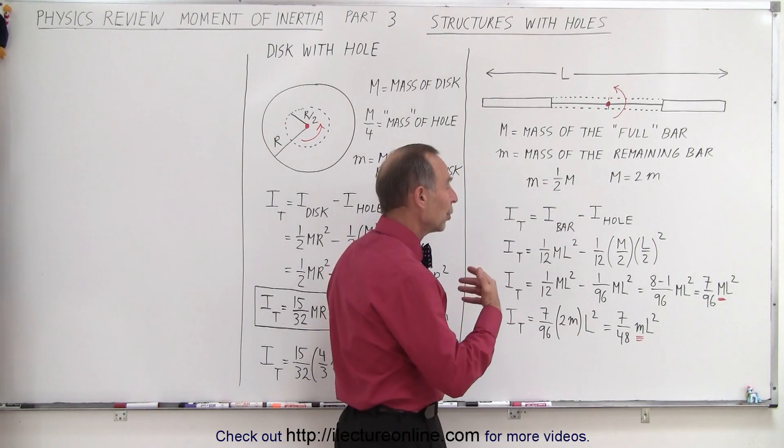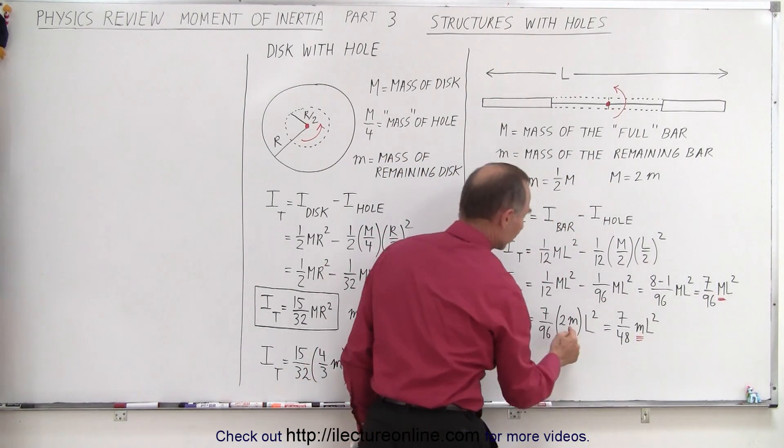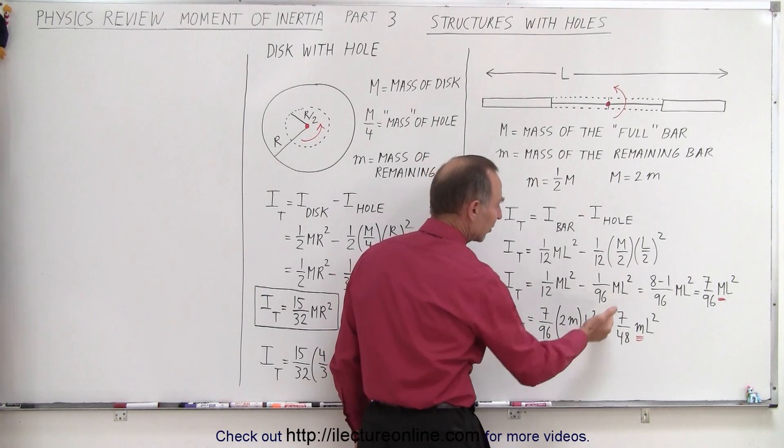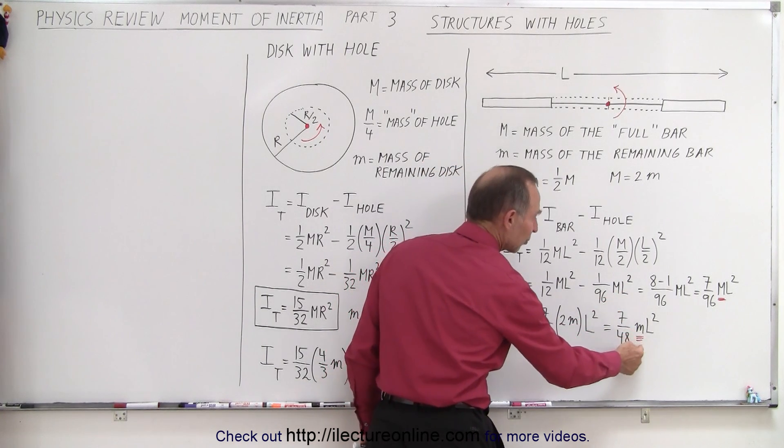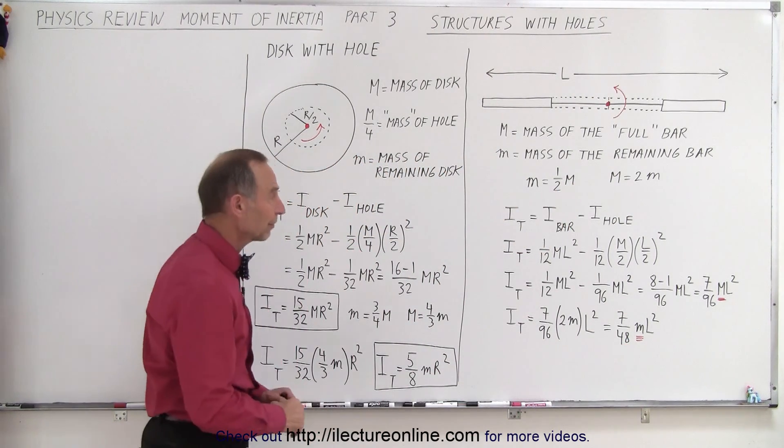Now, if you want to know it in terms of the mass of the remaining bar, then we simply replace M by 2 times small m, and then we get the total moment of inertia is 7/48, the mass remaining, times L squared. So that is how we make up the difference.